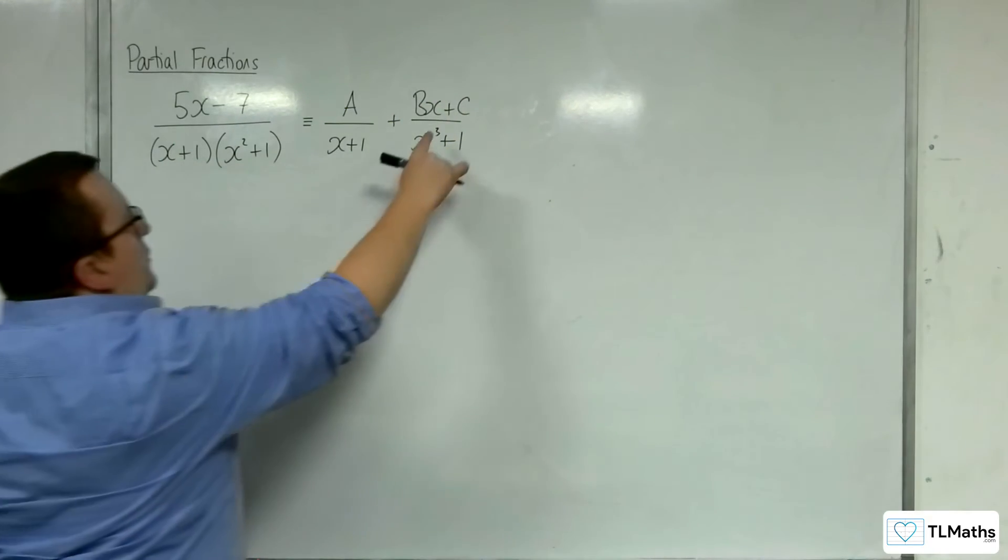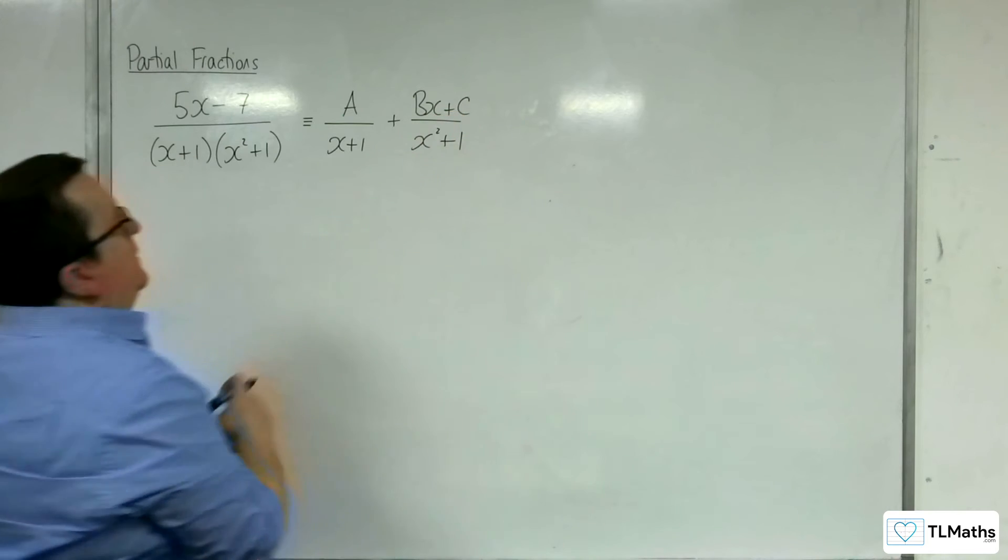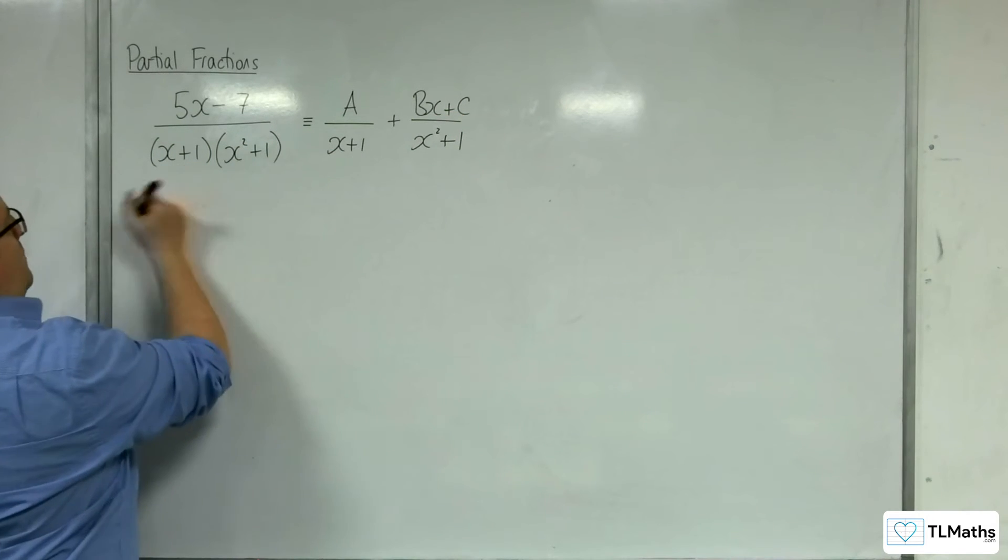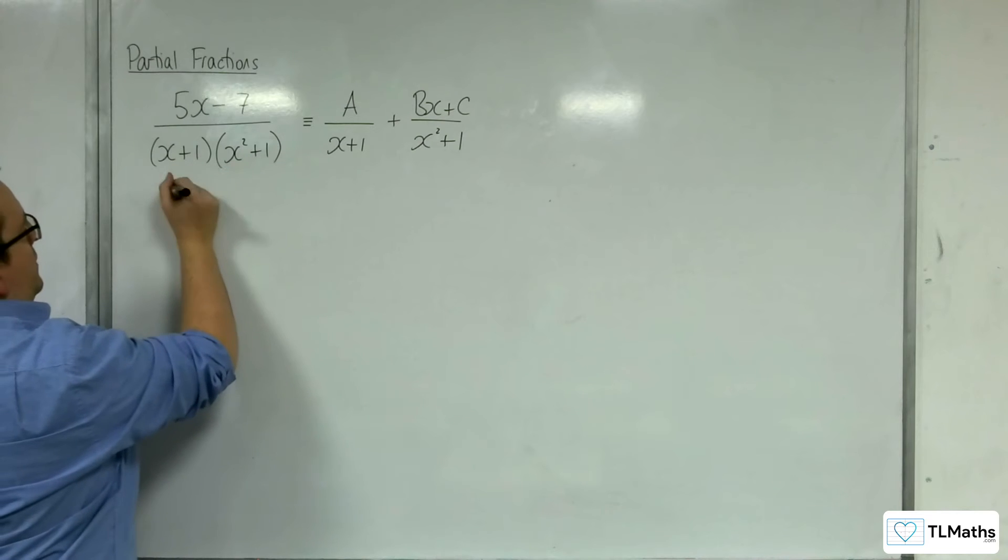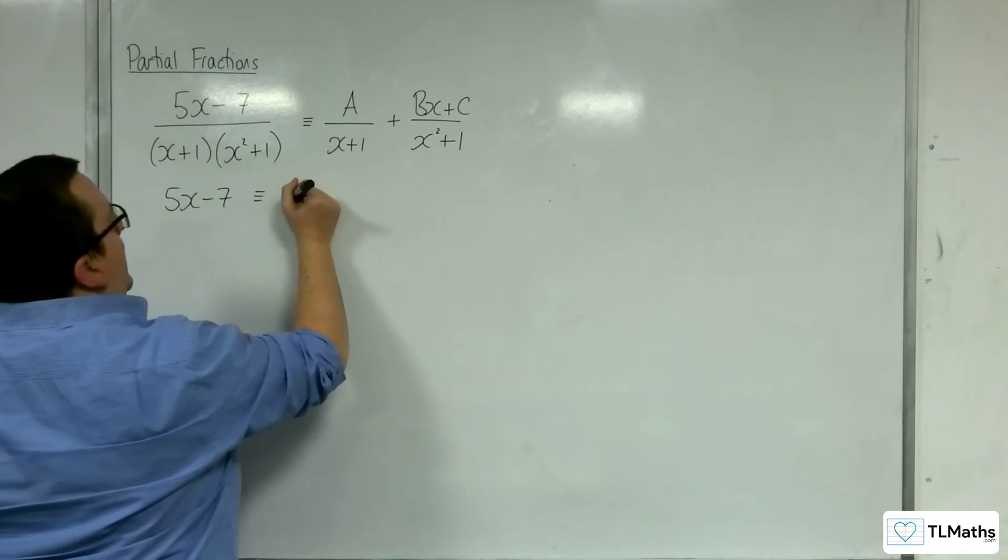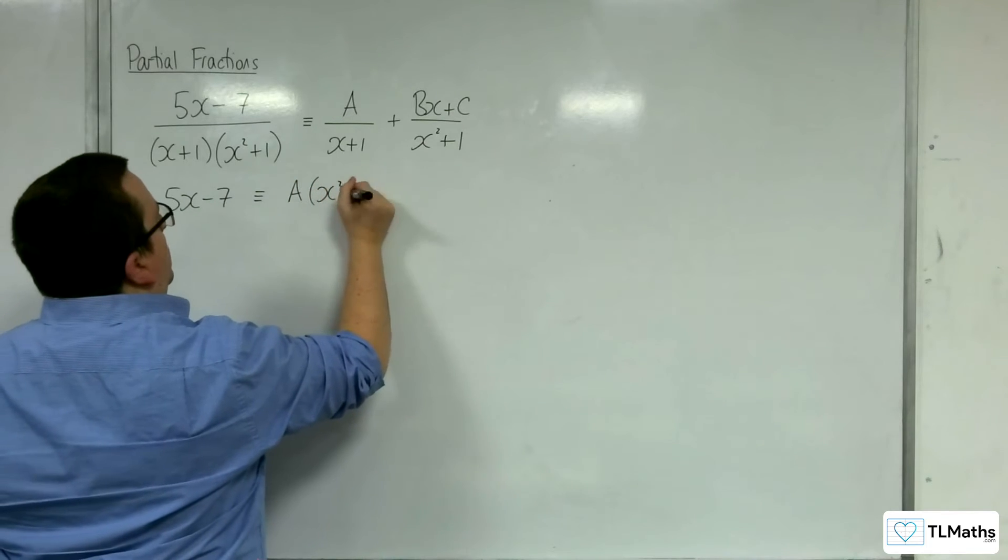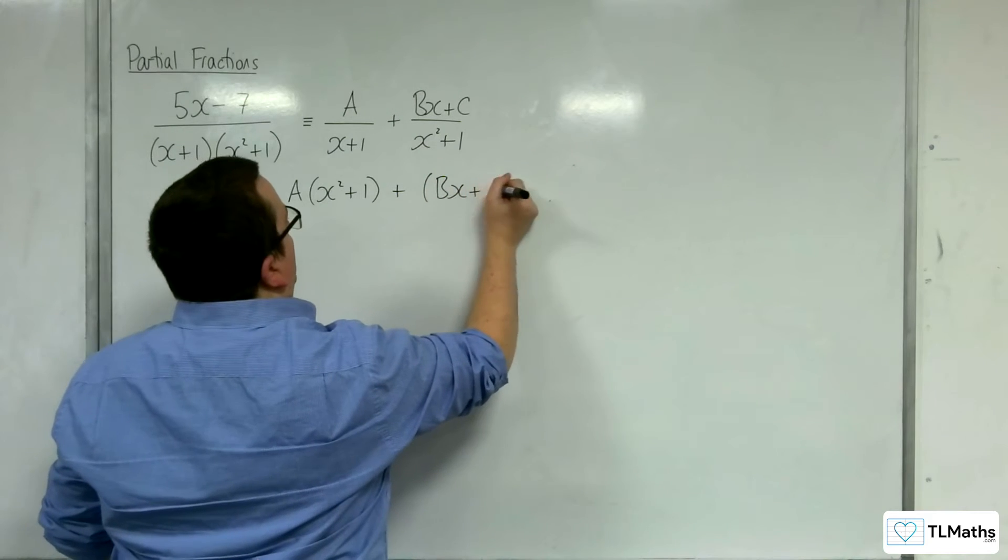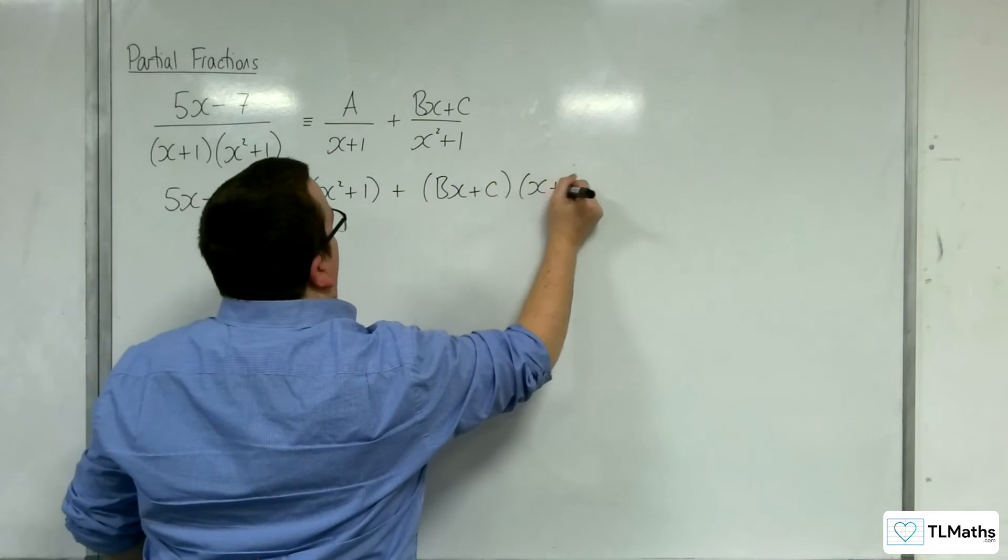So let's just make sure we change that as well. So let's run with this and see how this works. I'm going to multiply up as I usually would. 5x take away 7 is equivalent to A lots of x squared plus 1 plus Bx plus C times x plus 1.